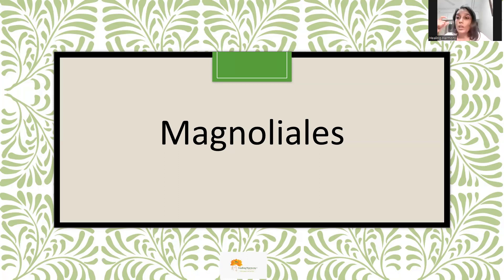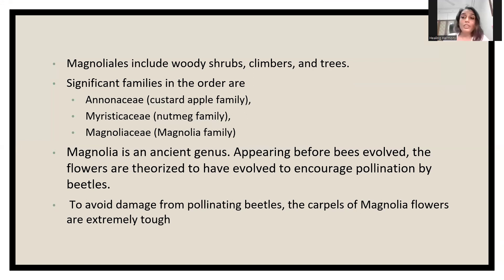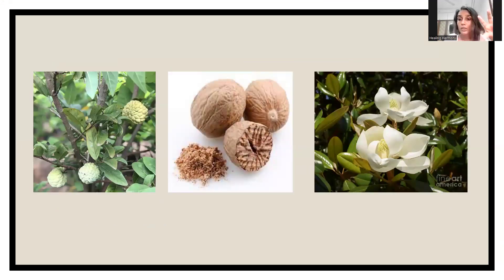Nux Moschata belongs to the plant kingdom and is from the first subclass of the dicotyledon group — subclass one — and the group is Magnolias. In this order we have different families: the magnolia family, the nutmeg family, and the custard apple family. The most well-known remedy is Nux Moschata; we also have Magnolia and Myristica as other remedies from this group.